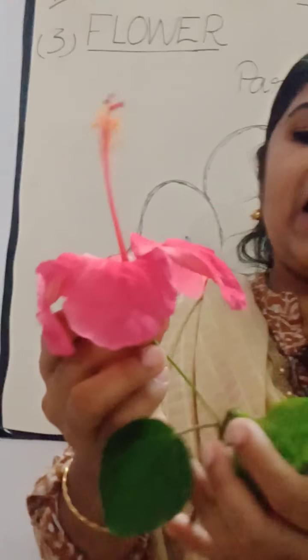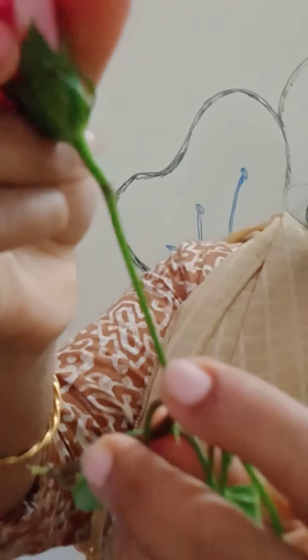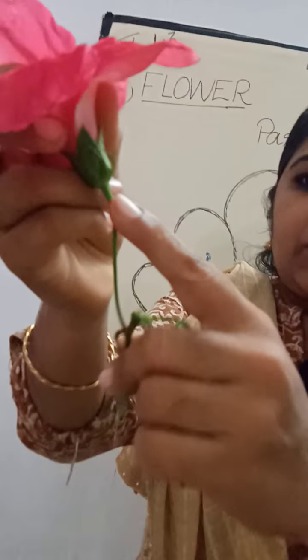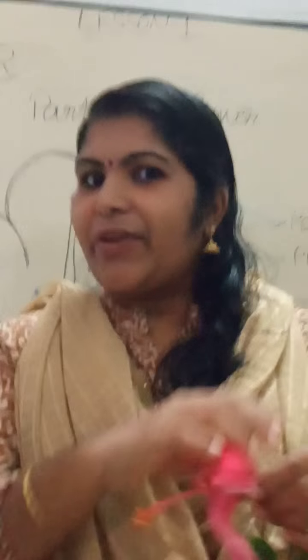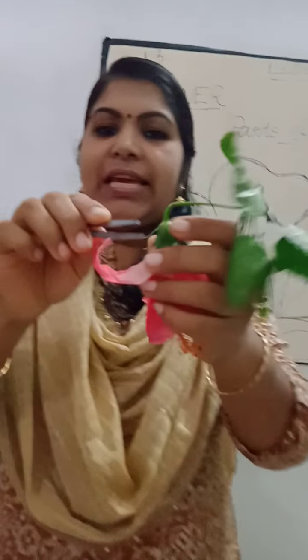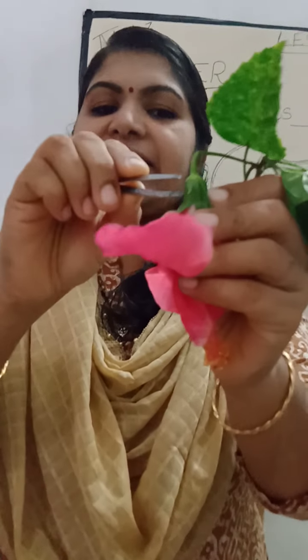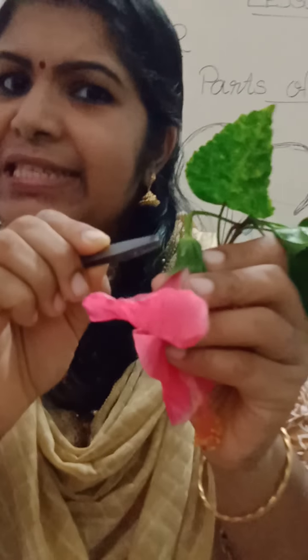So here you can see this is a hibiscus plant, and this is the hibiscus flower. So this is the stalk — the part that is attached to the stem. Then the second part is a green colored leaf-like structure. What is that? Very good — you can see the sepals. This is sepals, the green leaf-like structure.